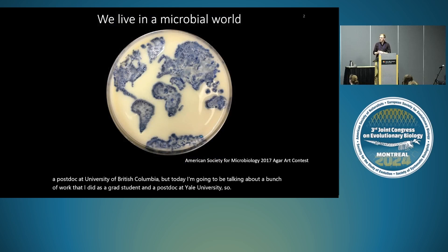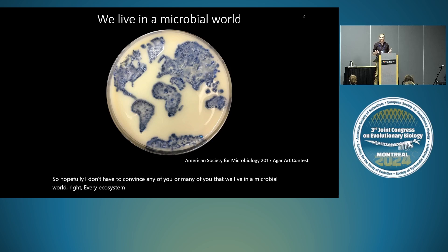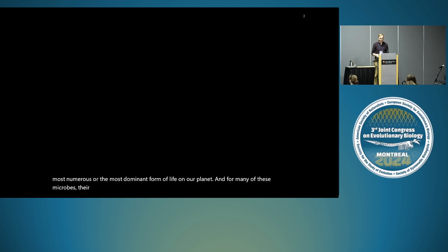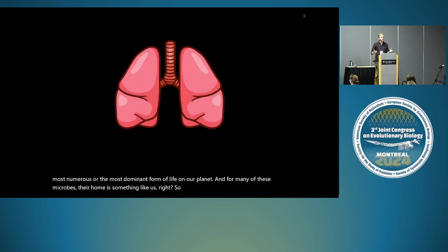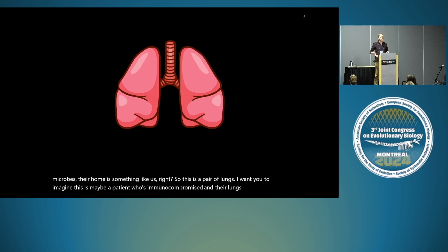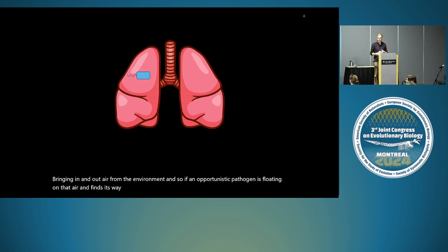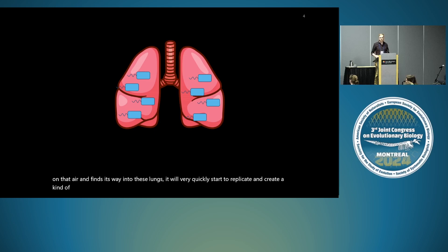Hopefully I don't have to convince many of you that we live in a microbial world. Every ecosystem on this planet has microbes and in many cases they are the most numerous or most dominant form of life. For many of these microbes, their home is something like us. So this is a pair of lungs — imagine a patient who's immunocompromised and their lungs are constantly bringing in and out air from the environment. If an opportunistic pathogen is floating on that air and finds its way into these lungs, it will very quickly start to replicate and create a virulent infection.